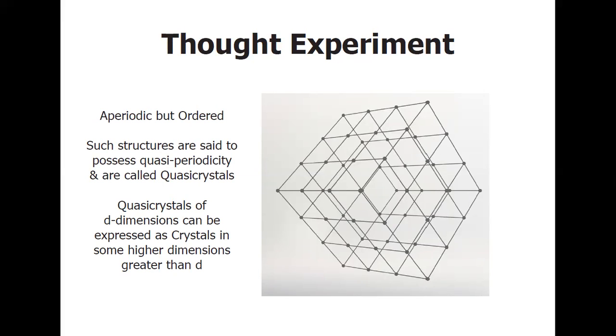Such a 2D set of points does not go into our classical definition of crystal. So such crystals are said to possess quasi-periodicity and have been formulated to constitute the quasicrystals. That is, a quasicrystal of dimension D can be expressed as a crystal in some higher dimension greater than D.